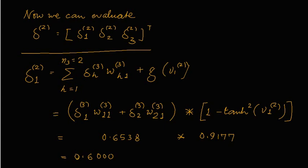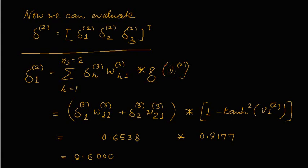Now we can calculate the local error at the second layer, which will obviously have three components because the second layer has three activation functions. To evaluate these, we have seen earlier that we need the sum — actually multiplication — of the third layer weights and third layer local errors, to evaluate local error at the second layer. Multiplying by the derivative of the activation function with the weighted sum at the second layer, when we substitute we get these terms and can evaluate the first local error at the second layer.